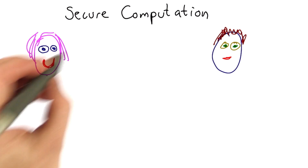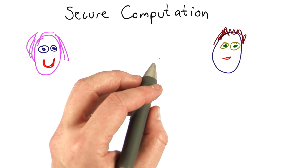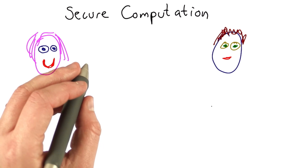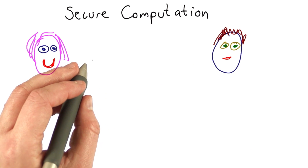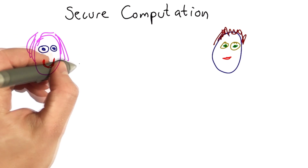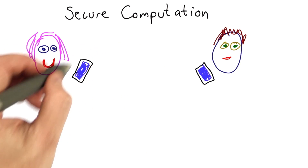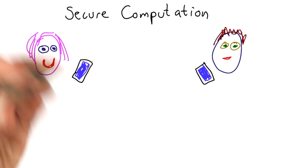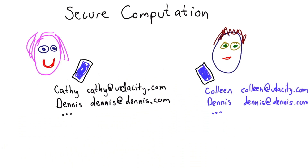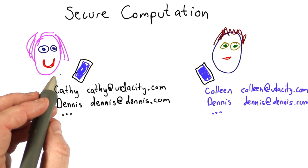So here's the goal of secure computation. Let's suppose Alice and Bob meet at a conference. They don't yet know each other, despite the fact that they've been talking with each other through units 1 through 6, but let's pretend they're not quite so friendly yet. And they both have their smartphones, and on their smartphone they have an address book. And what they want to do is figure out, do they know any of the same people? This is a pretty common occurrence at conferences.